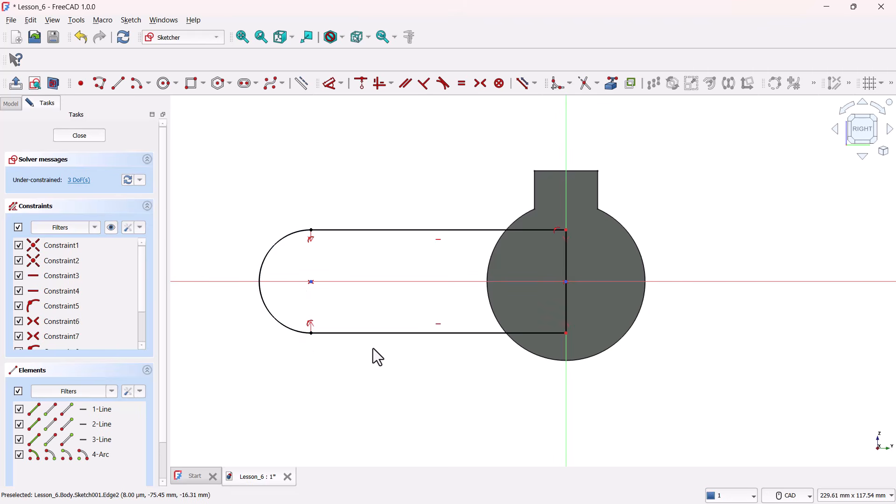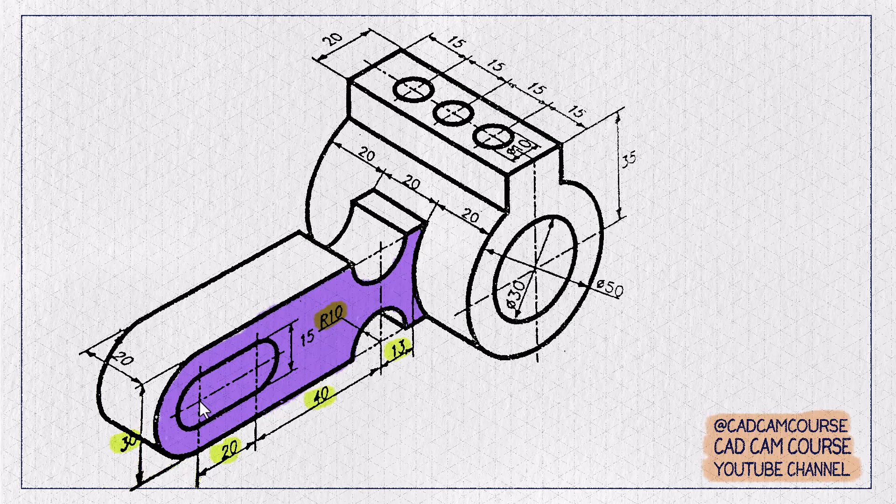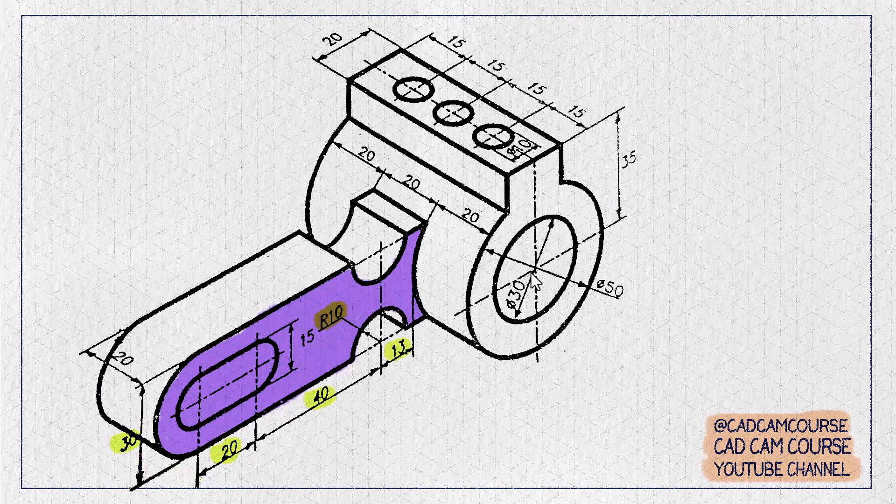Alright, now let's lock down the position of this circle. From the sketch, you can see the center of this arc needs to be at a distance of 20 plus 40 plus 13 plus radius of the cylinder, that is 25 millimeters from the origin.